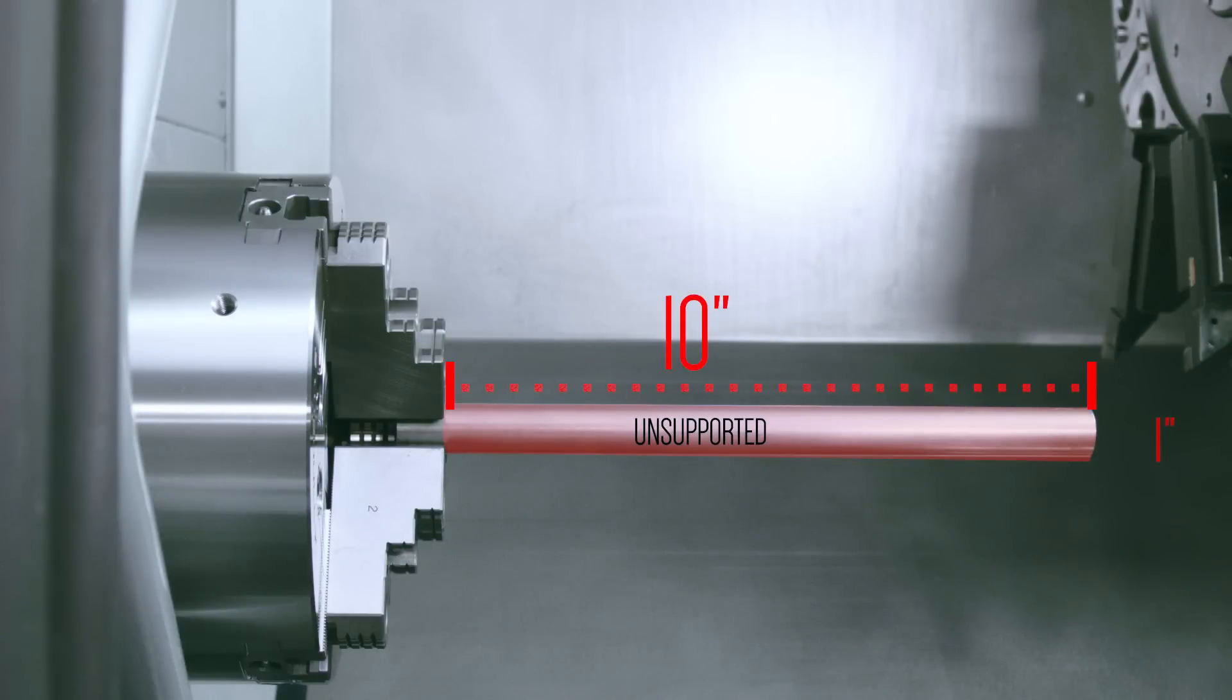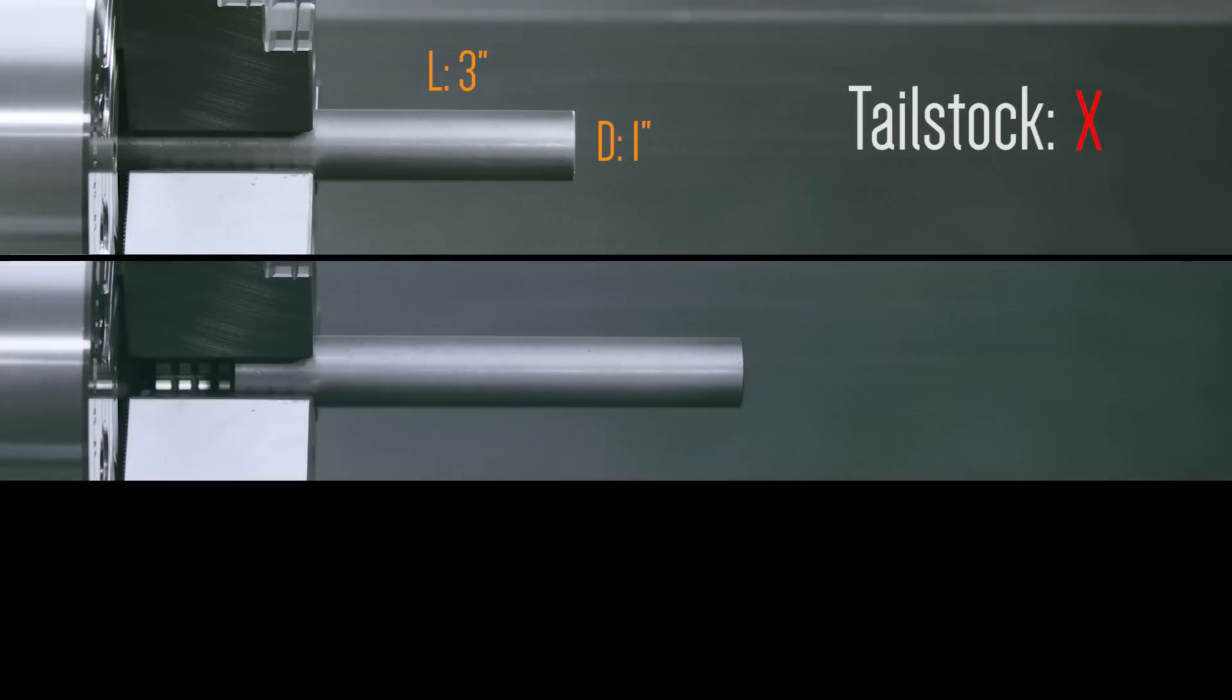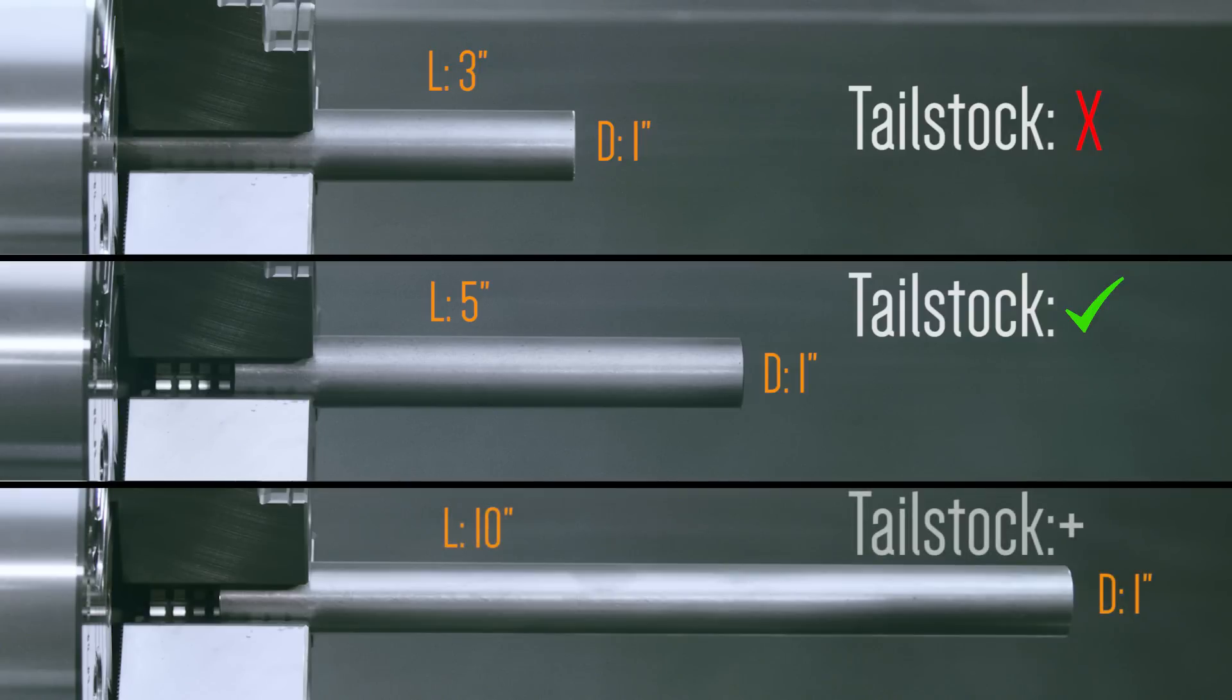Once you've exceeded an L to D ratio of 10 to 1, parts become so flexible that even tailstock support may not be enough. So, to summarize, we recommend when unsupported L to D equals 3 to 1 or less, tailstock support is probably not needed. When a part's unsupported L to D ratio is above 3 to 1, now it's time to start considering tailstock support. And when unsupported L to D is over 10 to 1, we'll definitely need tailstock support and maybe something more, like a steady rest.